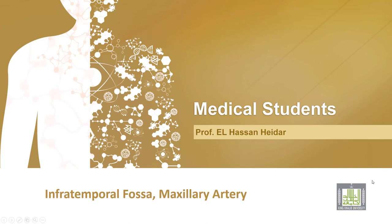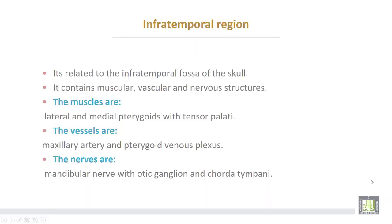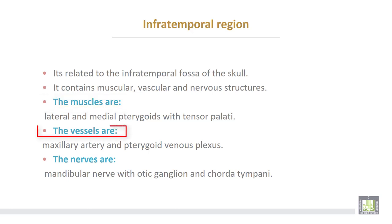The infratemporal region is related to the infratemporal fossa of the skull. It contains muscles, blood vessels, and nervous structures. The muscles are the lateral and medial pterygoid with tensor palatii muscles. The vessels are the maxillary artery and pterygoid venous plexus.